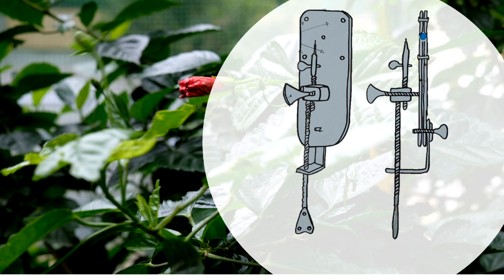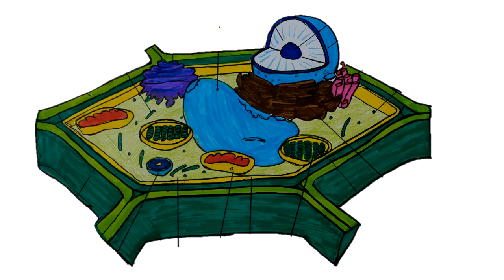In 1839, Schleiden and Schwann proposed a cell theory, stating that cells are actually the basis of all life. Over the centuries and years, cell biology made rapid progress, and today it encompasses dozens of sub-areas of interest. Technology has aided in this progress — from the early, simple, hand-held lenses and microscopes of Hooke and Leeuwenhoek, a variety of sophisticated techniques continue to reveal new dimensions to the cell.